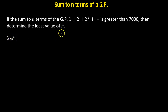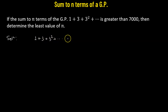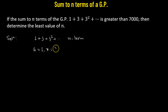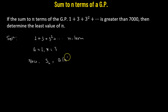We start with the given geometric progression: 1 + 3 + 3 squared, going up to n number of terms. Here the first term a is 1 and the common ratio r is 3. We know that the sum to n terms of a geometric progression is given by a times (r raised to the power n minus 1) divided by (r minus 1).